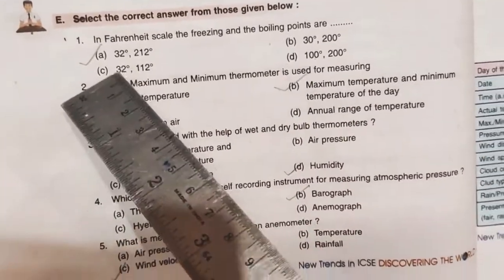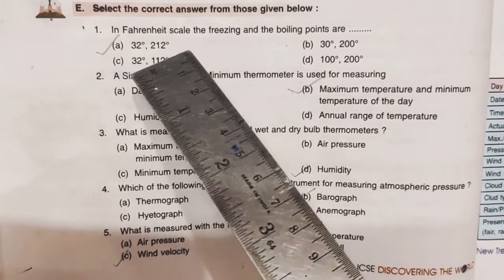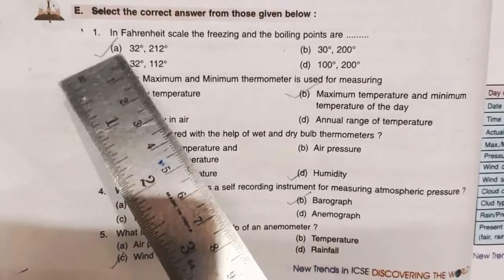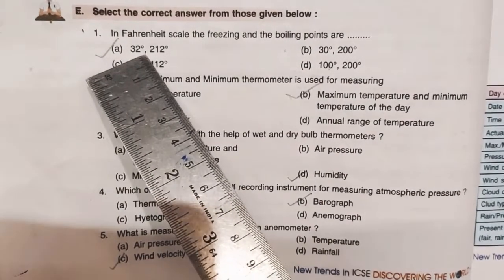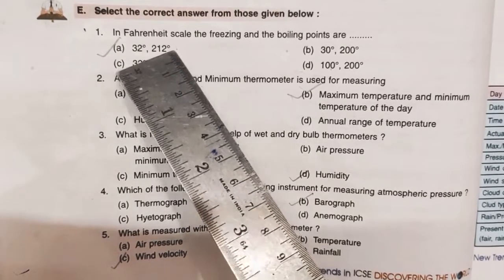E said, select the correct answer from those given below. Number 1: in Fahrenheit scale, the freezing and the boiling points are. A is the correct answer: 32 degrees and 212 degrees.